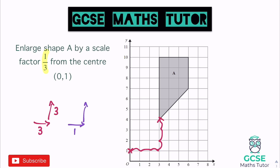The movements aren't getting bigger here — a third of three is one. So instead of three across we go one across, and instead of three up we go one up. Back at the center of enlargement, going one across and then one up — that's where the new point will be. Shape A is six high and three across. A third of six is two, so it goes two up; the top is three across so only one across; the right side is three down so only one down. Connect those up and that's our final shape.